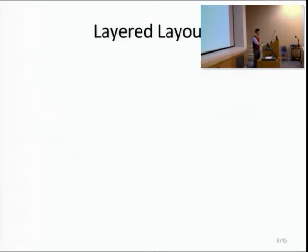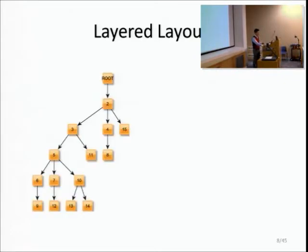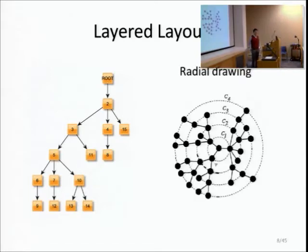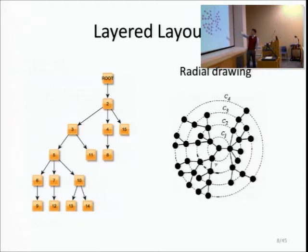We've already seen what we more formally call the layered layout - putting different nodes onto horizontal layers. Alternatively, you can put them into concentric circles to give a radial layout. In this radial version, the root is at the very middle, all its children are on the first concentric circle, and so on. Essentially it's still a layered layout where each layer is a circle.